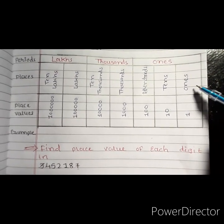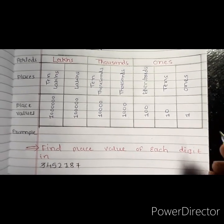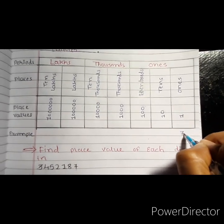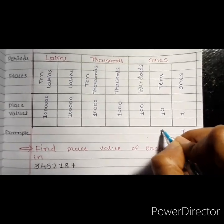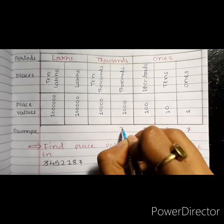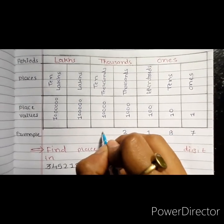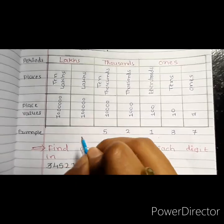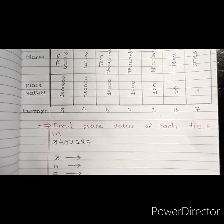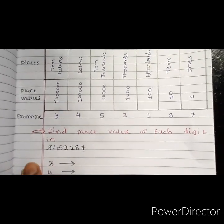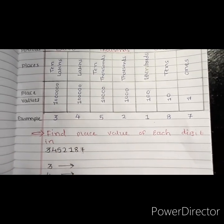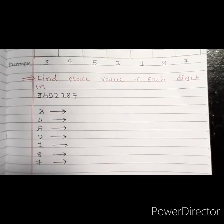Which is the rightmost place? Ones. Yes. So put 7 in the first place. Then 8 in Tens. Then you have 1, then 2, then 5, then 4, and 3. So here students, we arrange all the digits in their respective places.